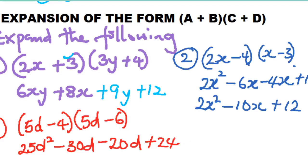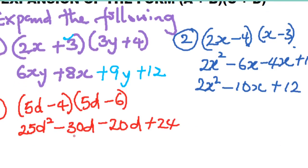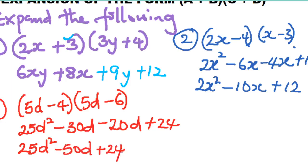We have minus 30d and minus 20d as like terms. Combining: 25d² minus 30d minus 20d gives minus 50d, plus 24. So the answer is 25d² − 50d + 24. That brings us to the end of this form of expansion — algebraic expression of the form (A + B)(C + D).